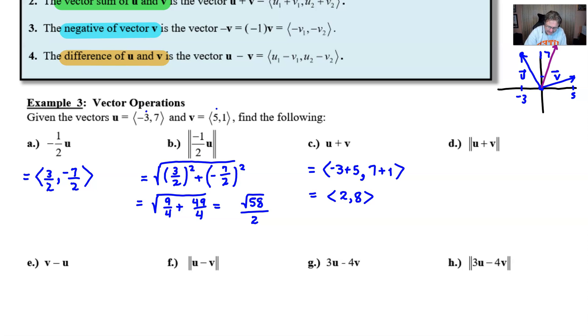Part d, you see, we're just going to be finding the magnitude of the vector that we've already found. So all the work preliminarily is done. We just take the square root of 2 squared plus 8 squared, and this would be 4 plus 64.